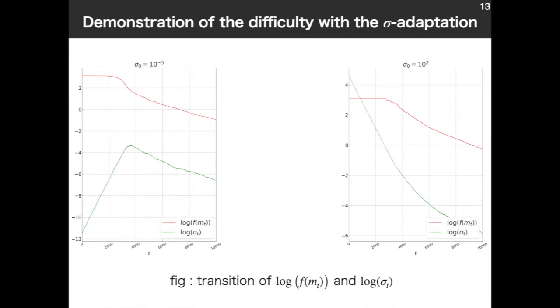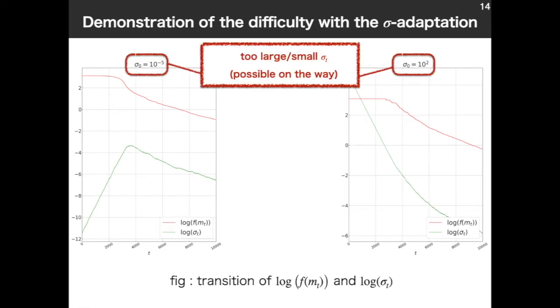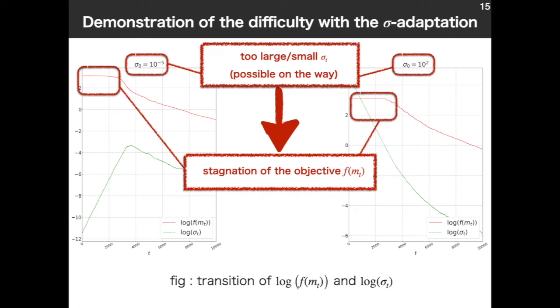These two figures show the transition of log f(m_t), red line, and log σ_t, green line. The difference between these two figures is here. In the left, the initial σ is too small, and in the right, the initial σ is too large. Of course, now it's said so. But, because the (1+1)-ES has probabilistic nature, so such situation is possible on the way of optimization. And in such case, as you see, there is a stagnation of the objective function f(m_t).